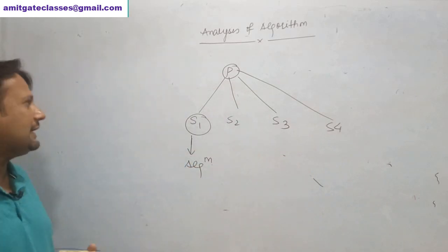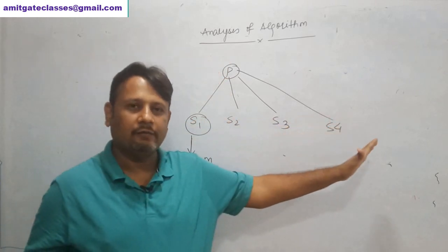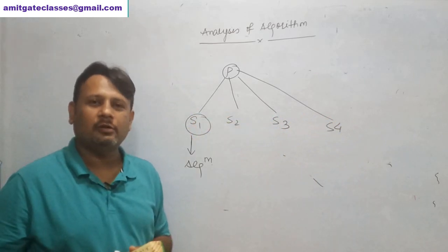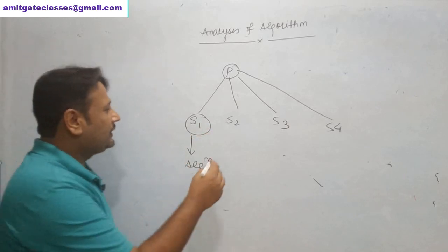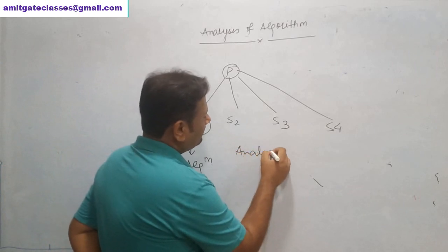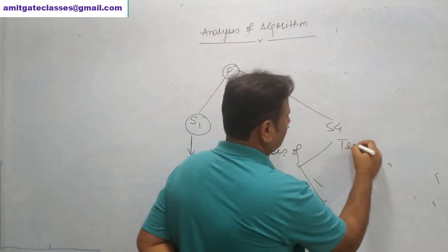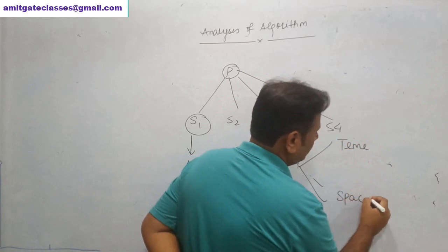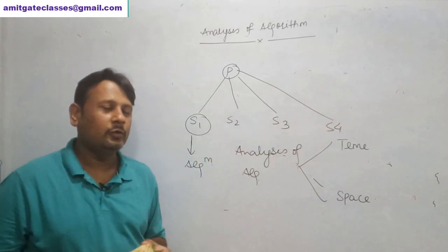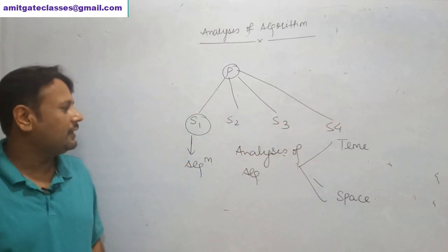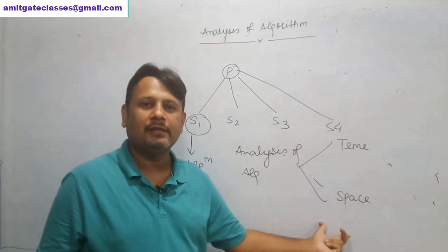Similarly, if you're a computer scientist solving a particular problem, and there are multiple solutions available, how do you check which solution is good? We need to do the analysis of those algorithms. The analysis of an algorithm can be done in two ways: one is based on time, and one is based on space.